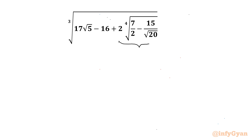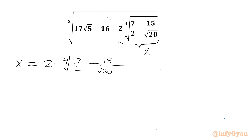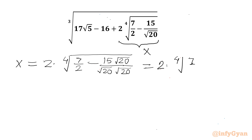I will consider the part including 2 equal to x. Let's simplify x first. I can write 2 times the 4th root of 7 over 2 minus 15 over √20. Now I will rationalize the denominator by multiplying numerator and denominator by √20. I can write 2 times 4th root of 7 over 2, minus 15 times √20, which is 2√5, divided by 20 only.